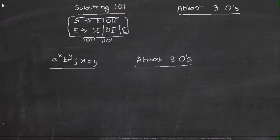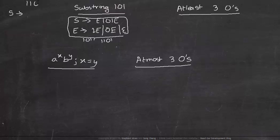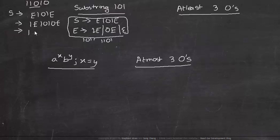To test it, let's derive the string 1 1 0 1 0. We start with S going to E 1 0 1 E. We replace E with 1 E to get 1 E 1 0 1 E, then replace E with 0 E to get the desired symbols, then replace all E's with epsilon. We get 1 1 0 1 0 — this string is accepted, so this context-free grammar is correct.